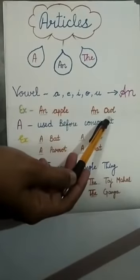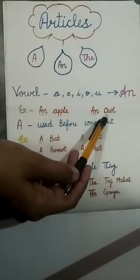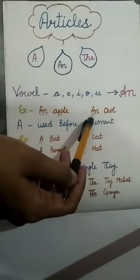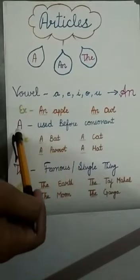AN OWL, if you see, O is a vowel. So we use AN. Now let's come to article A.